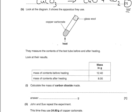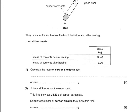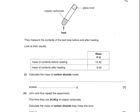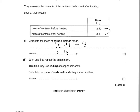They measured the contents of the test tube before and after heating. Calculate the mass of carbon dioxide made. The difference in mass is the mass of carbon dioxide: 12.4 minus 8 equals 4.4 grams. John and Sue repeat the experiment using 24.8 grams of copper carbonate — double the original amount. So they will make double the carbon dioxide: 8.8 grams.